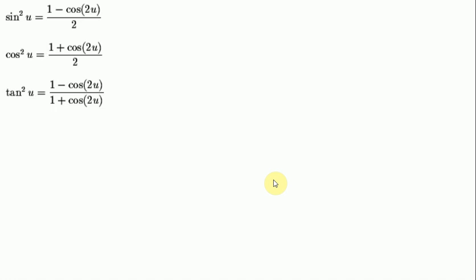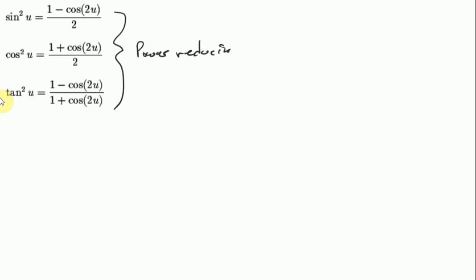So what is a power reducing formula? Basically, if you have a trigonometric function like this one and you want to make it into a lower power — such as the first power — this is a squared function, and you want to make it into a function like sine, cosine, or tangent to the first power. You're going to use one of these three power reducing formulas here.